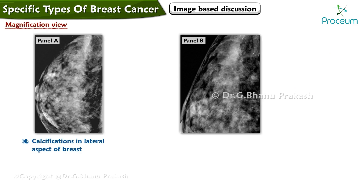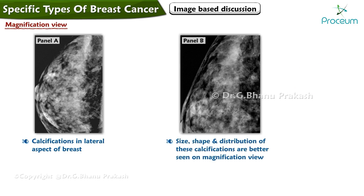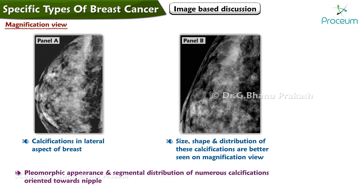A magnification view panel A shows calcifications in the lateral aspect of the breast. The size, shape, and distribution of these calcifications are better visualized on the magnification view. The pleomorphic appearance and segmental distribution of numerous calcifications oriented towards the nipple is a classic appearance of ductal carcinoma in situ.